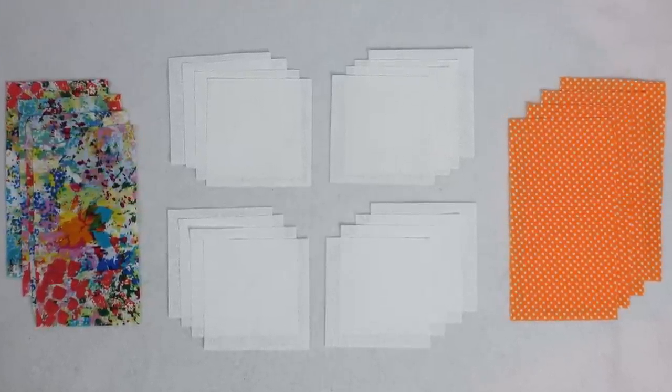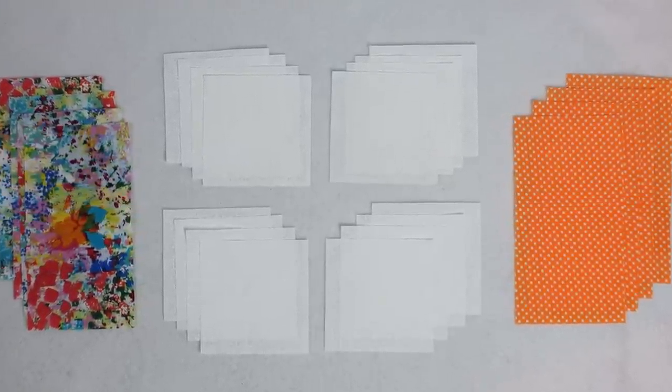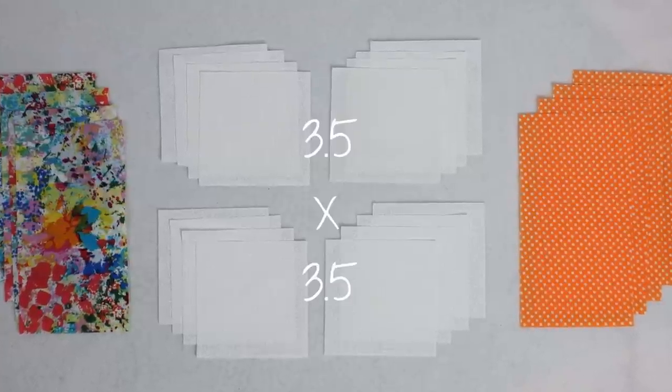You will also need 16 squares in your light fabric cut to 3.5 by 3.5 inches. If you want some tips and info on how to best cut your fabrics I covered some of those in the earlier sew along videos so make sure to check those out.